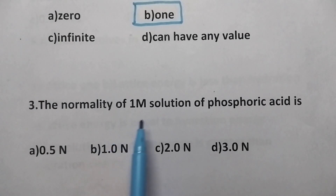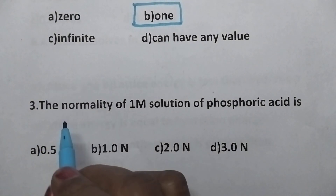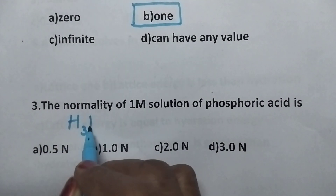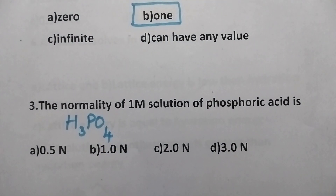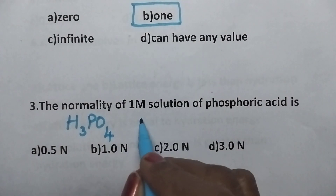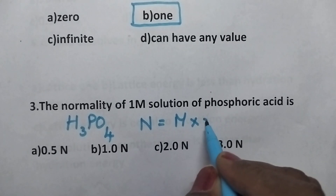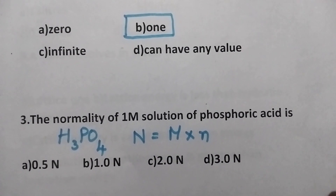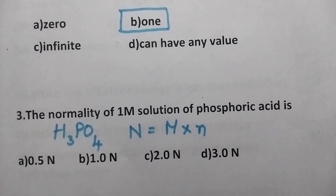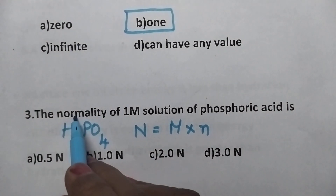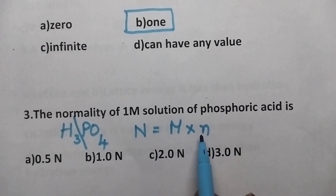The normality of 1 molar solution of phosphoric acid is? The formula of phosphoric acid is H₃PO₄. Coming to the relation between normality and molarity: normality is equal to molarity into N-factor. N-factor, in case of acids, is the basicity. If you carefully observe phosphoric acid, here 3 hydrogens can be replaced, so N-factor is equal to 3.